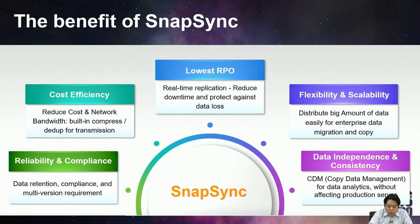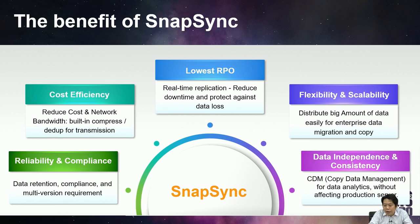The fourth benefit is easy copy data management and data analysis on the secondary NAS copy. The fifth benefit is data retention, compliance, and multi-version management. For government regulations or internal policies requiring data retention periods, you can combine SNESync and SNEShot to meet compliance requirements and protect your data. SNEShot backs up multiple versions to prevent ransomware, and real-time SNESync increases availability and disaster recovery capability.